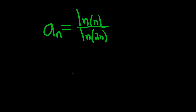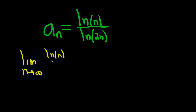Determine whether the sequence converges or diverges. To do this we just have to take the limit as n approaches infinity of the sequence. If we get a number, we say it converges to that number and that number is the limit. If we don't get a number, then we say it diverges.